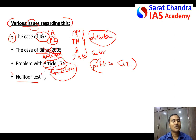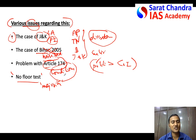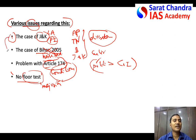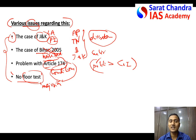Another issue is the floor test. Mostly, if Governors feel that the majority is not there in the legislative assembly — that the Council of Ministers does not have the majority — the Governor immediately dissolves the legislature without even conducting a floor test first. These are the various issues with the dissolving of the legislative assembly by the Governor, purely based on discretion, which is sometimes illegal, malafide, and unconstitutional.